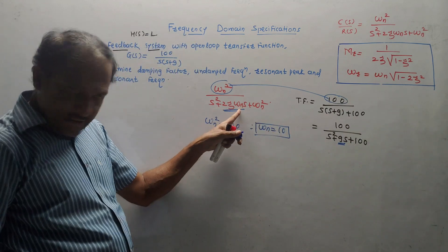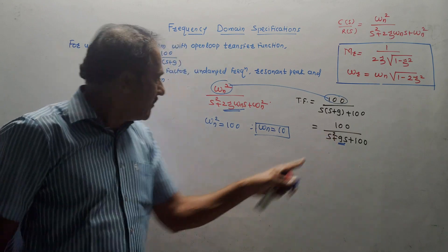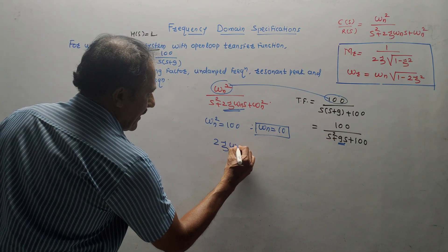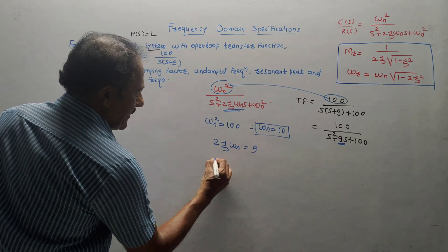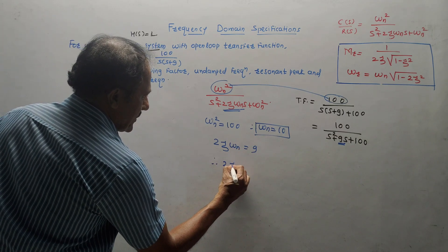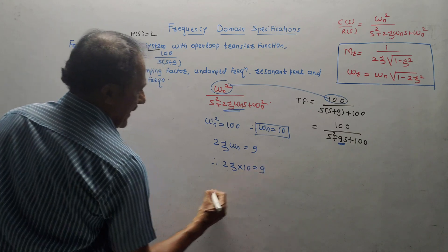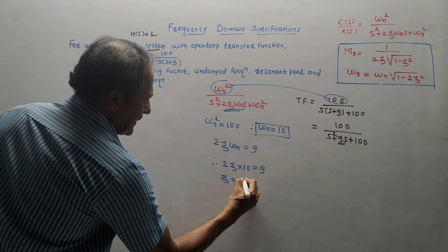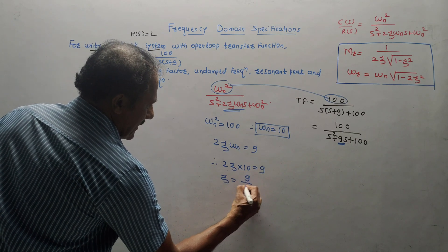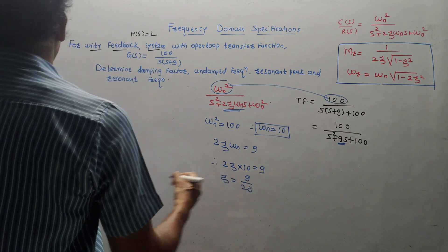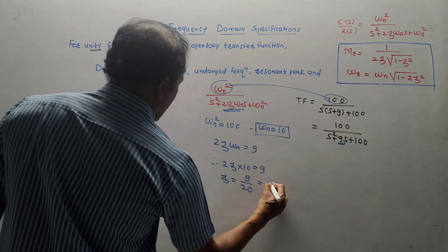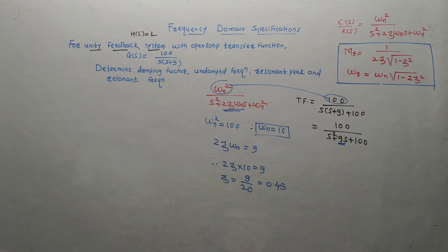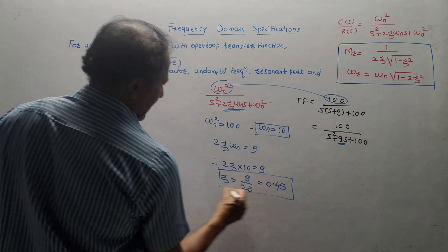From 2ζ × 10 = 9, we get zeta = 9/20 = 0.45. This is the value of the damping factor. Now we have calculated the damping factor and undamped natural frequency omega n.